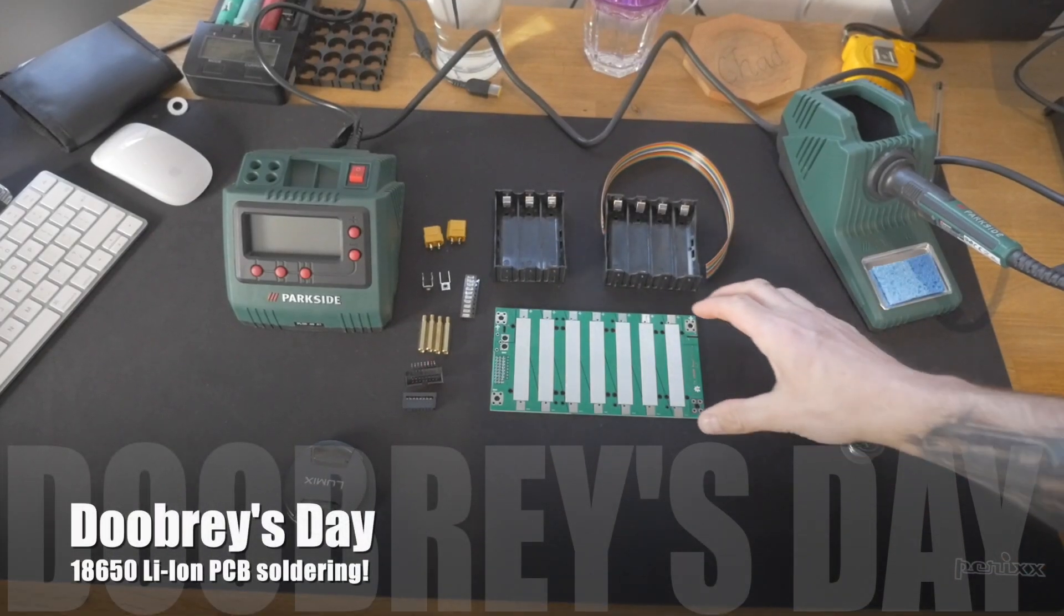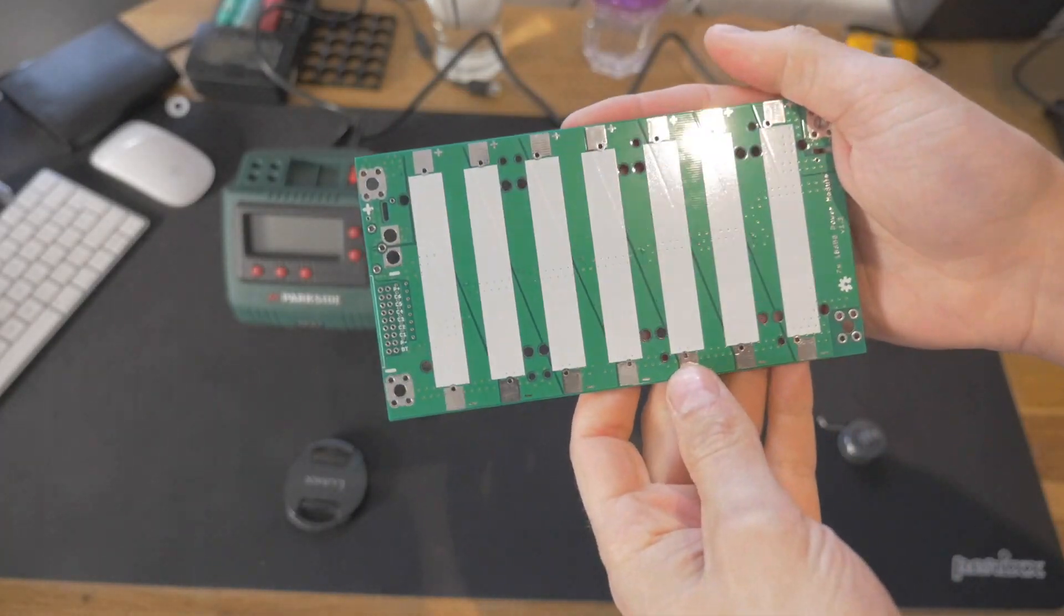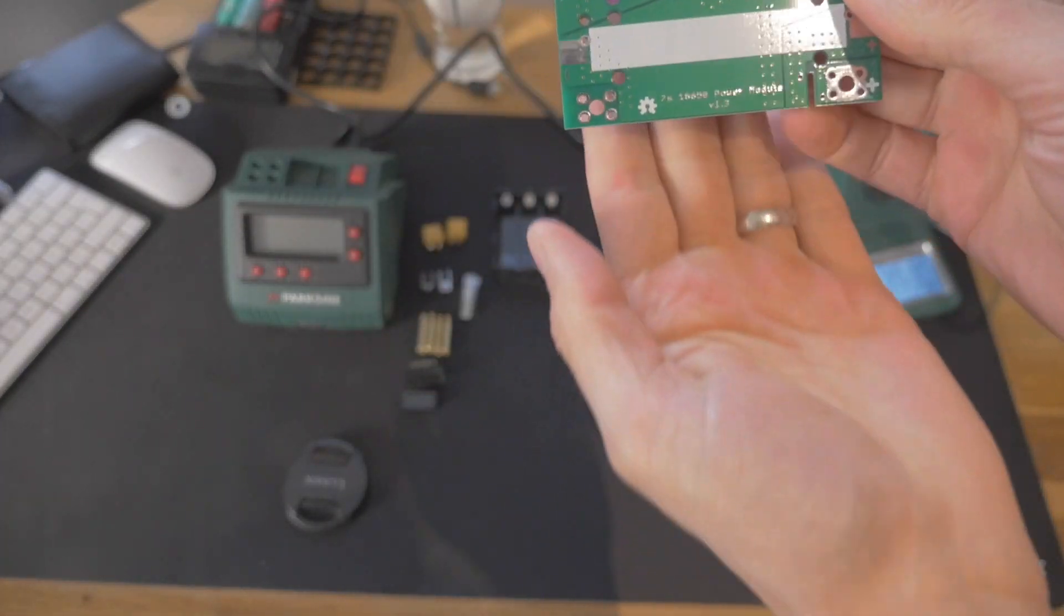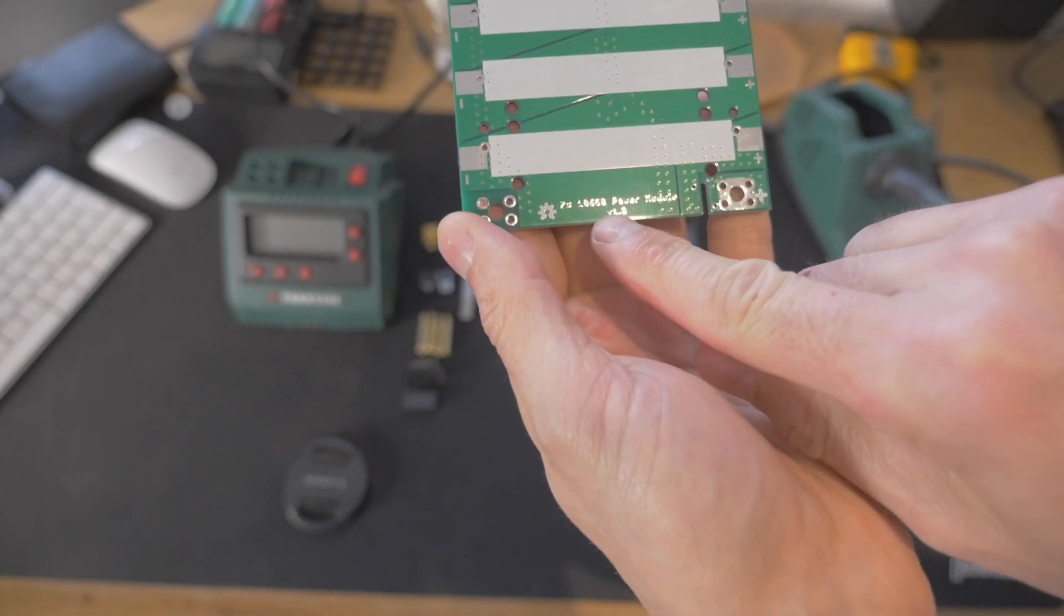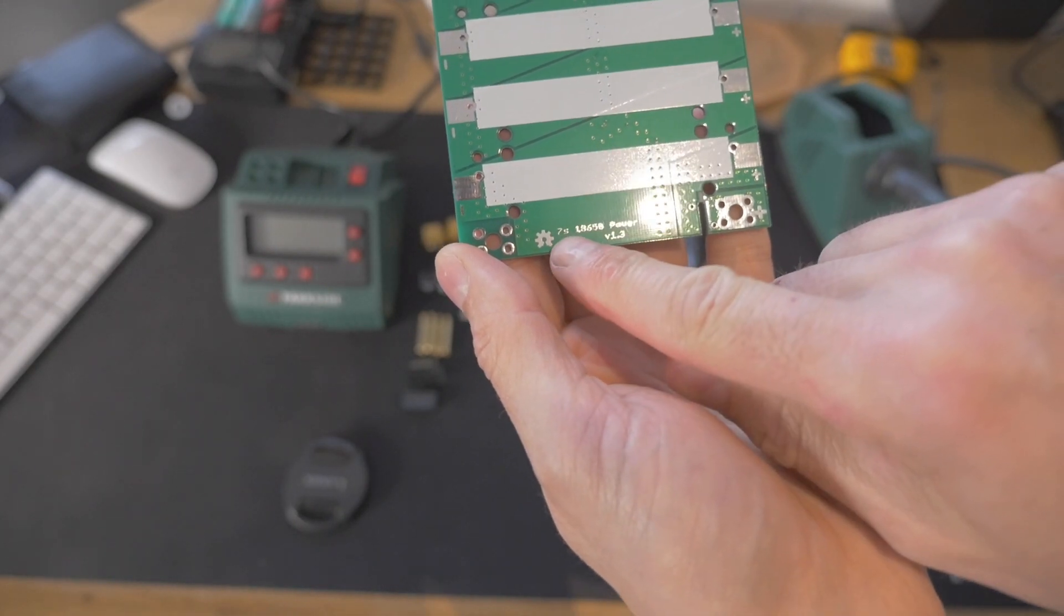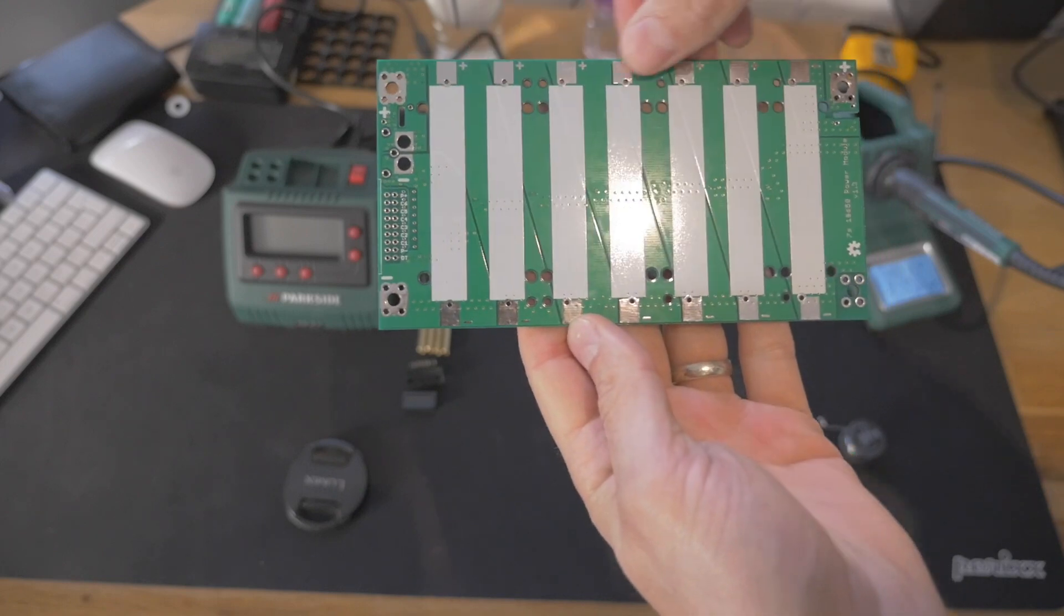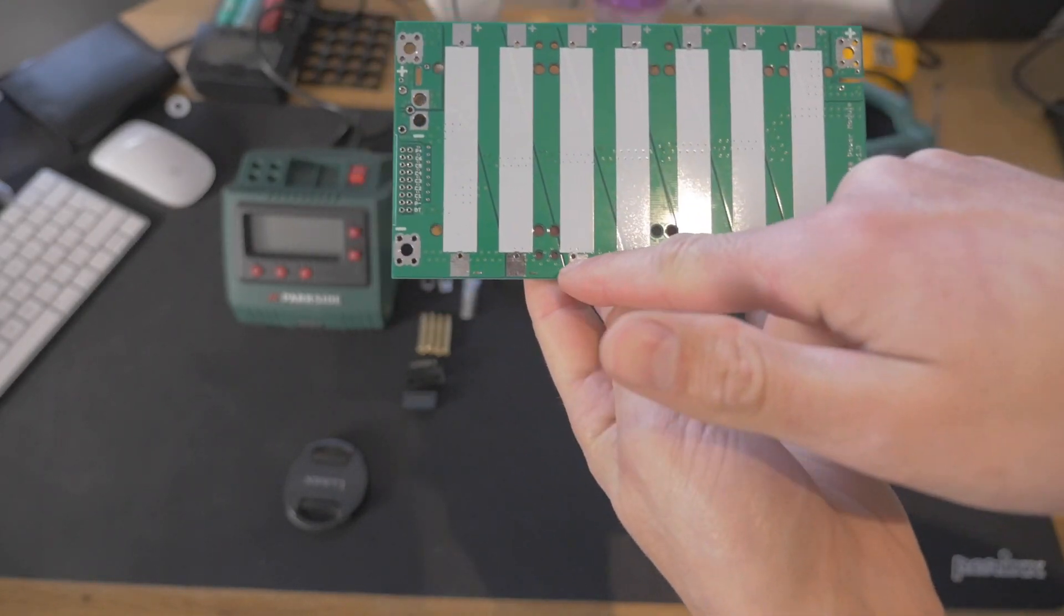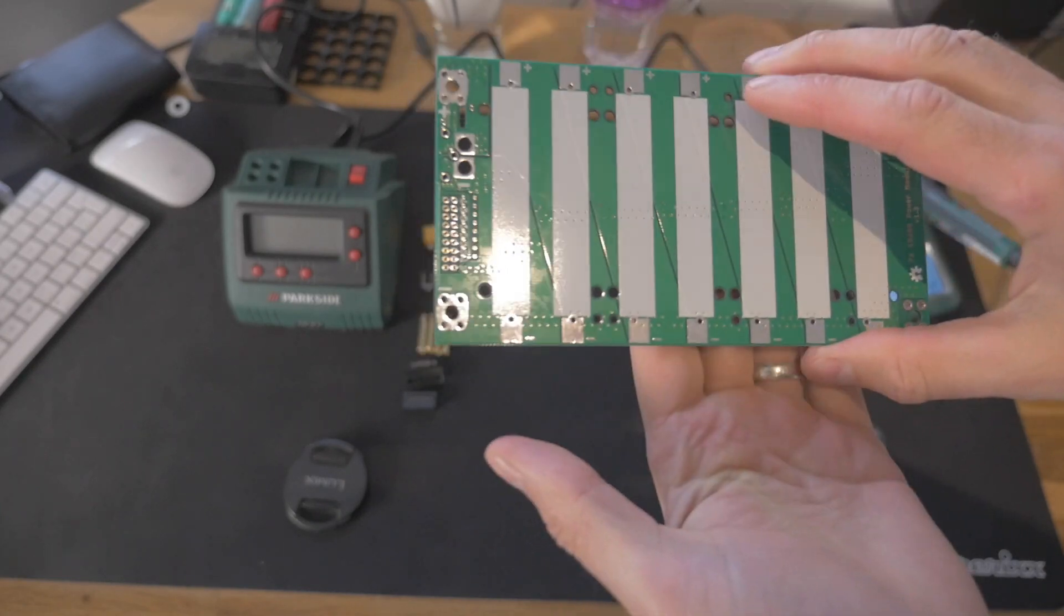Let's talk about the Jehu Garcia PCB boards. What we have here is version 1.3, the power module version 1.3 for 18650, so for a seven string set of cells. On top you've got all of the positives, on the bottom you've got all of the negatives, and you get it as a kit form. So you get the PCB, you get some of these holders for cells.